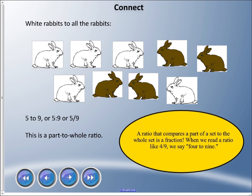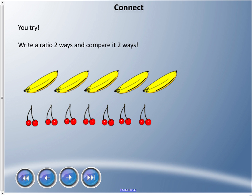White rabbits to all the rabbits is 5:9 or 5/9. When we have a ratio that compares a part to the whole, we can write it as a fraction. We can't write part-to-part as a fraction, but we can write part-to-whole as a fraction. When we read a ratio like 4/9, we say 'four to nine.'